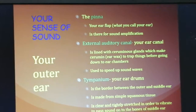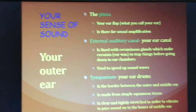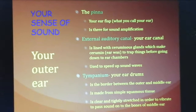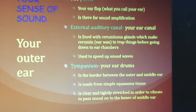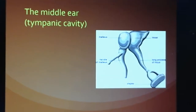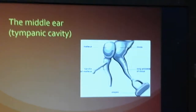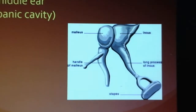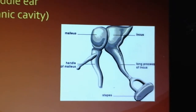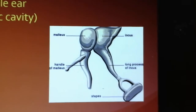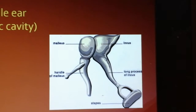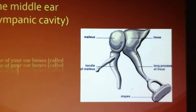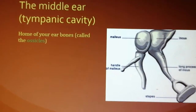Vibrations hit the pinna, bounce down the auditory canal, and hit the tympanium, which vibrates. Behind the tympanium is your middle ear, also called the tympanic cavity — this is where you find your ear bones. These bones are called the ossicles: the malleus (the hammer), the incus (the anvil), and the stapes (the stirrup). Just like forging metal — you lay the hot piece on the anvil and use the hammer to flatten it out.